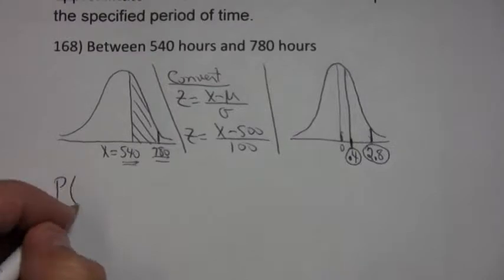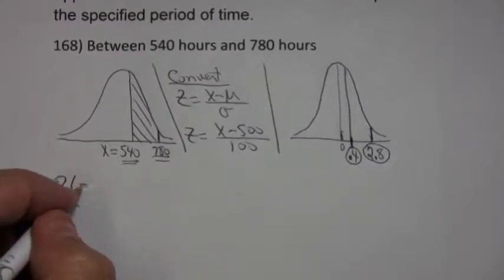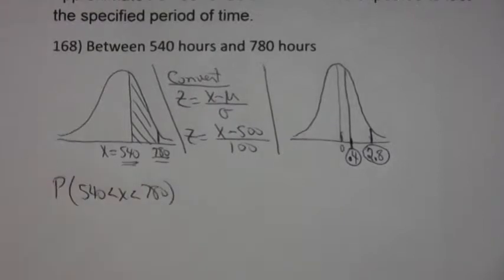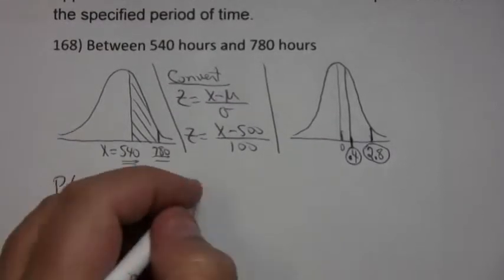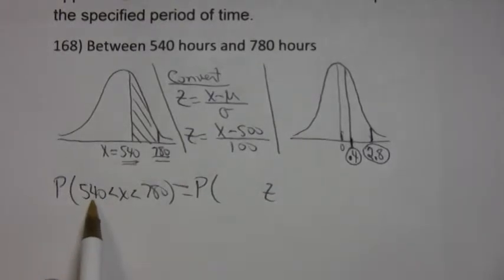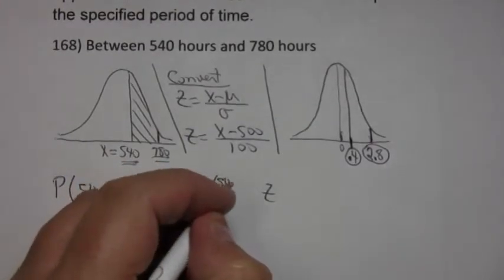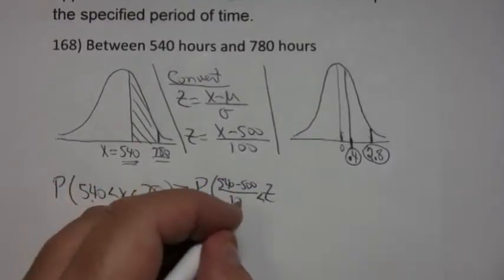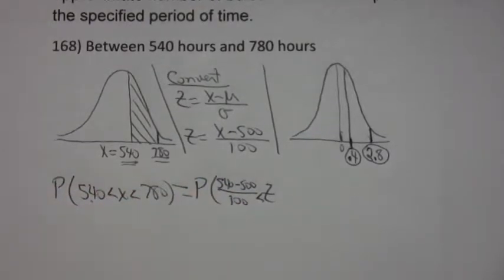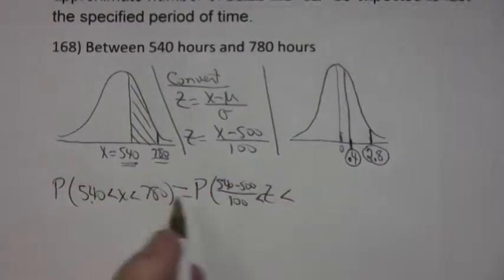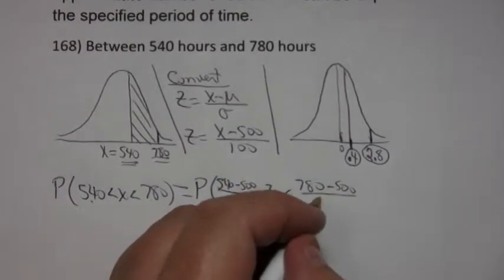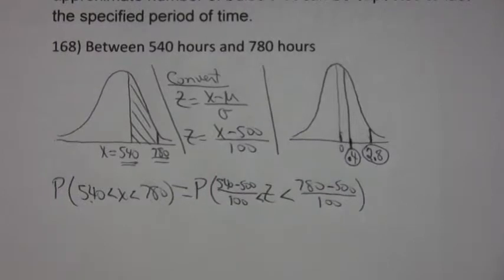But what you're really doing is finding the probability that x is between 540 and 780. And then you're converting it to a z value. And to convert 540, you take 540, subtract the mean which is 500, and divide by the standard deviation.